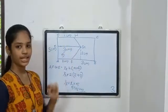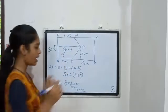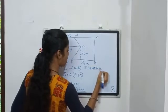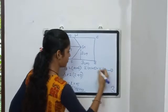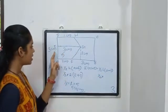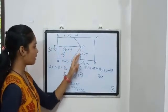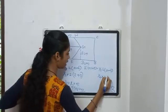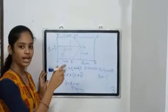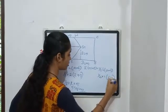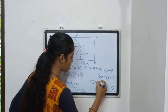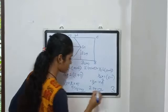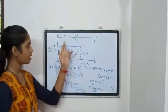Now for trapezoid EGHD: area equals half × H × (A + B). Half into 1 into 4. The height is 1 centimeter and the parallel sides give a result of 4. So trapezoid EGHD equals 2 square centimeters. Trapezoid AFGE is 5 square centimeters and trapezoid EGHD is 2 square centimeters.